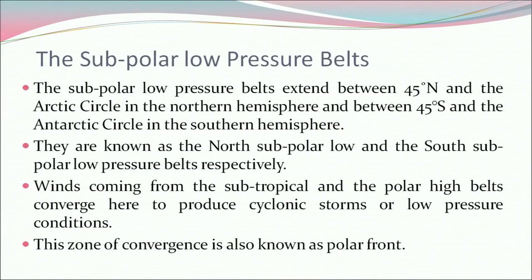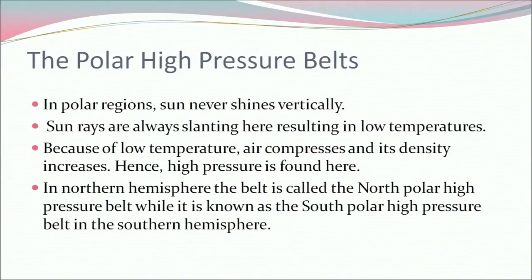The subpolar low pressure belt extends between 45 degrees north and the Arctic Circle in the northern hemisphere, and between 45 degrees south and the Antarctic Circle in the southern hemisphere. They are known as the north subpolar low and the south subpolar low pressure belt respectively. Winds coming from the subtropical and the polar high belts converge here to produce cyclonic storms or low pressure conditions. This zone of convergence is also known as the polar front. In polar regions, the sun never shines vertically — sun rays are always slanting, resulting in low temperature. Because of low temperature, air compresses and its density increases, hence high pressure is found here. In the northern hemisphere, it is called the north polar high pressure belt, while it is known as the south polar high pressure belt in the southern hemisphere.